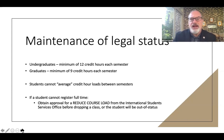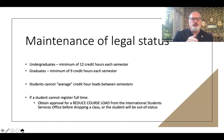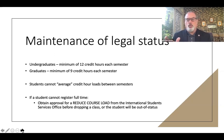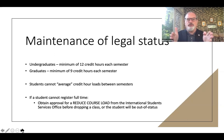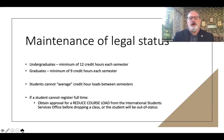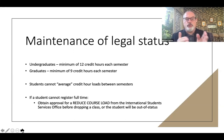You cannot average the required amount of credits between semesters — that's each semester of your study. You can't be under-enrolled in one semester and then take extra credits in the next to average 12 credits. For example, over two semesters, fall and spring, an undergraduate needs 24 credits total and a graduate student needs 18 credits — each semester must meet the minimum independently.